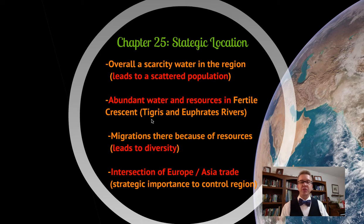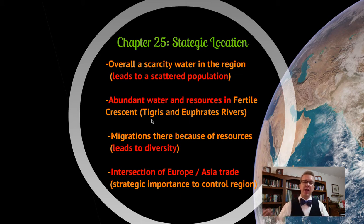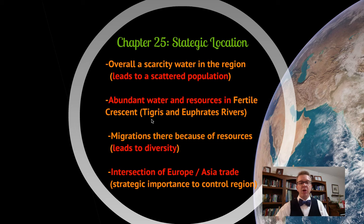Because of those resources — not just water for growing crops in the Fertile Crescent, but also mineral resources like iron, copper, and other things — people migrated there to access them. Because they're migrating, they bring their culture, which leads to cultural diversity. It's also an intersection of trade between Europe and Asia, which makes it strategically important to control the region.